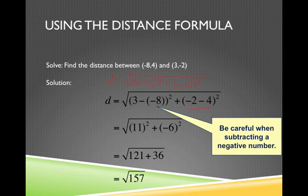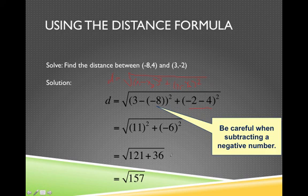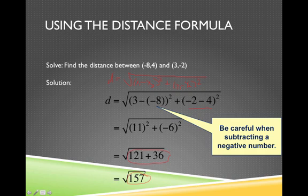Let me tell you when you've made a mistake. If you end up with a negative number here, a negative number here, you have made a mistake. You're always going to be dealing with positive numbers once you square your horizontal and vertical distance difference. And so here we have the square root of 157 is our distance between the two points.